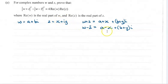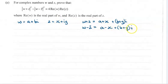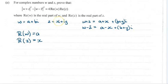So if we're going to do w minus the conjugate, the real part will be a minus x, and the imaginary part will be b minus the conjugate of iy — which would be minus iy — so it becomes b plus y, i. So the real part of w is a, and the real part of z is x. That's what we're trying to get to — something that only has a and x in it.